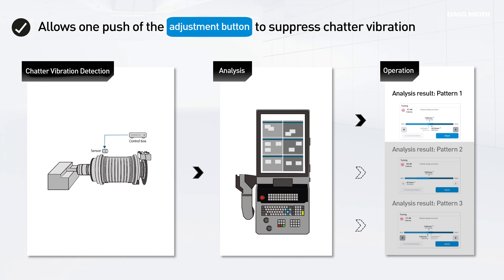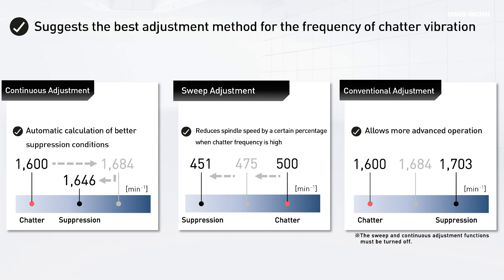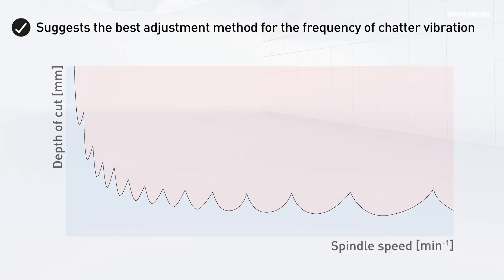How do you actually operate Celos Chatter Control? If vibrations exceeding a certain value are detected during machining, they are automatically analyzed. The type of chatter vibration is determined and the optimal adjustment method is automatically displayed on the Celos screen. There are three major adjustment methods. The continuous adjustment and sweep adjustment functions are newly added to the conventional MVC function. Chatter vibration can be divided into stable and unstable regions based on the relationship between spindle speed and depth of cut. When chatter vibration occurs, Celos Chatter Control shifts the spindle speed to the stable region to suppress it.